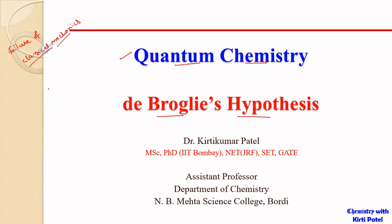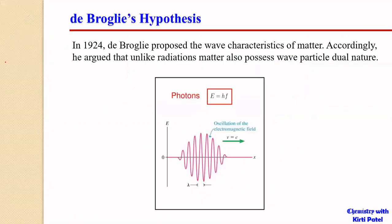After the experiment of Compton, what Compton had suggested — through the experiment of Compton — we had seen that waves, or light, or electromagnetic radiation has both the wave nature as well as a matter or material nature, as was being explained by the Compton experiment.